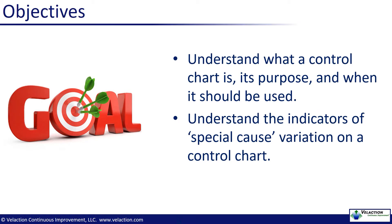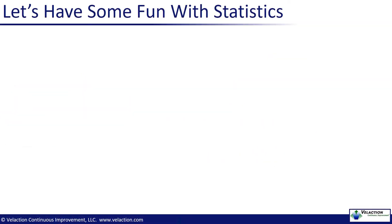Some of these decisions will be influenced by something known as special cause variation. Control charts are very helpful in isolating these types of problems from the normal random fluctuations of a process. If you've done a little bit of research on control charts, you probably know that there is a lot of statistics involved. For most people, the mere thought of this type of math sends them into a cold sweat. But let me try to give you an example to make it a little bit more fun.